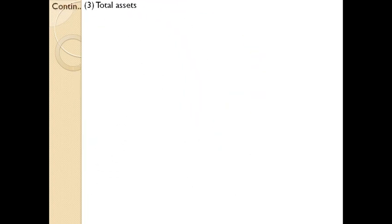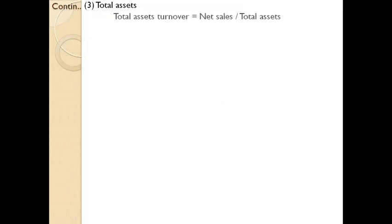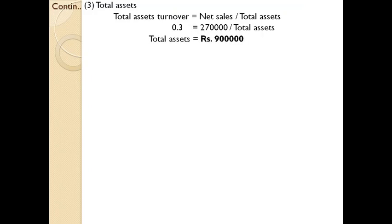Next, total assets. The total asset turnover ratio is 0.3 times, and the equation is net sales divided by total assets. Substituting: 0.3 = 2,70,000 / total assets, giving total assets = 9 lakhs.